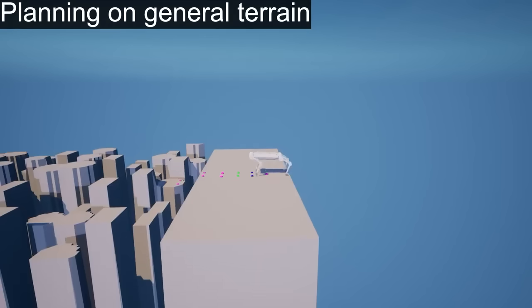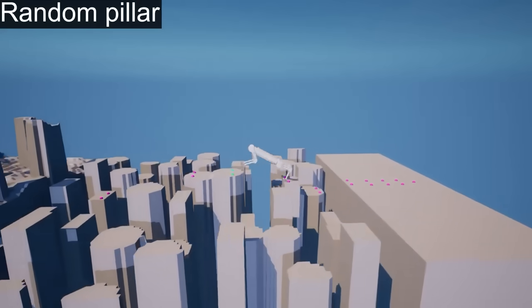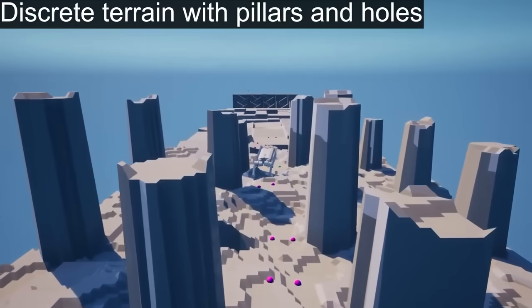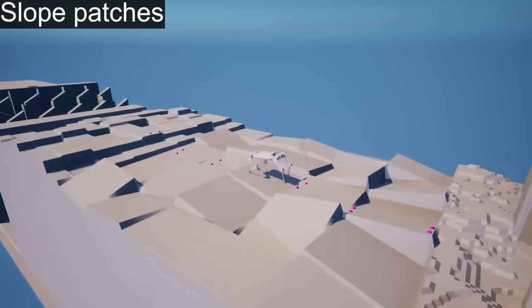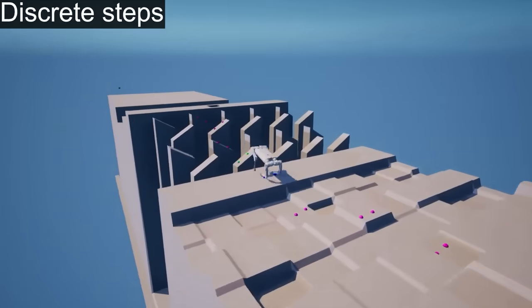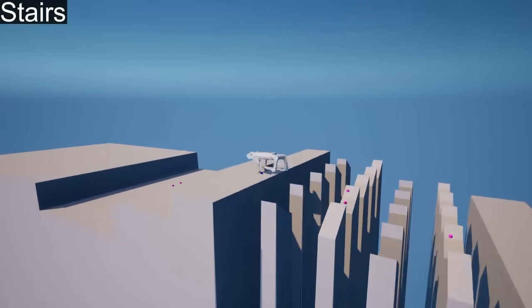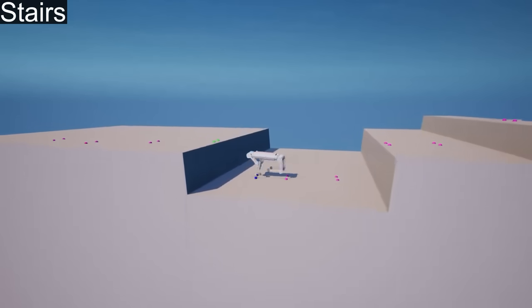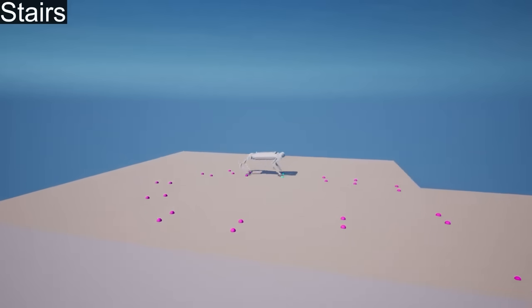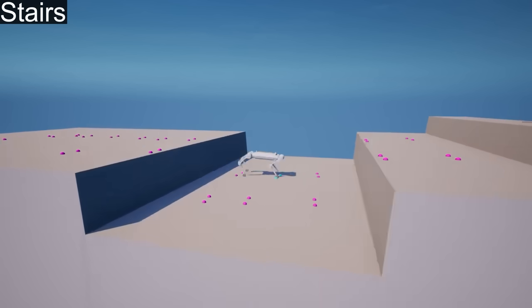The robust navigation module performs well even on maps with various unstructured obstacles. These maps include pillars of various shapes and heights arranged sequentially, impassable pillars or pits in discrete terrains, 1.1-meter patches tilted randomly up to 30 degrees, steps of varying heights and lengths, consecutive ramp pillars of various heights and angles, and maps requiring descent or ascent of high ledges.